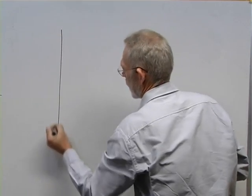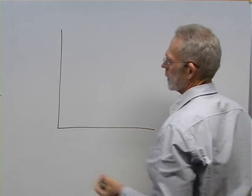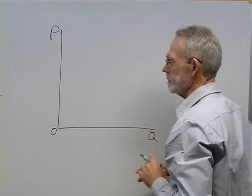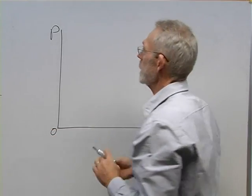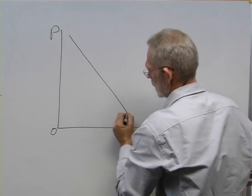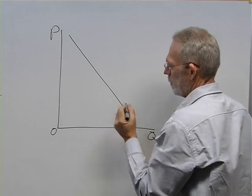I'll show you how I draw a demand curve. I use basically a three-step approach. Start off with the axes: vertical, horizontal, name the axes, price and quantity. I know the demand curve slopes downwards from left to right. So there's my demand curve. I name it.